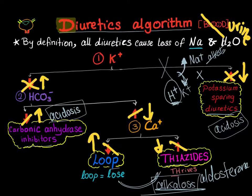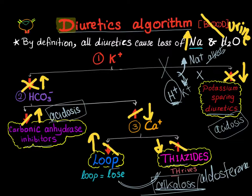If you are looking at your electrolytes and you see there is loss of sodium and water, you will have more sodium and water in the urine than usual. The first thing you look at is potassium.